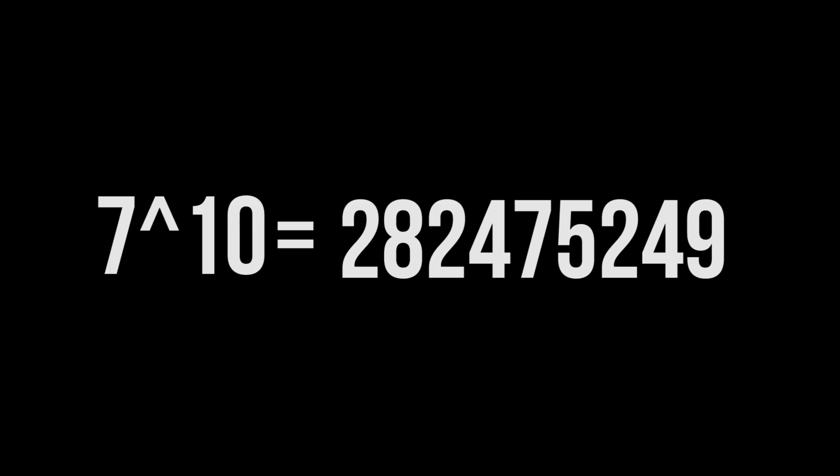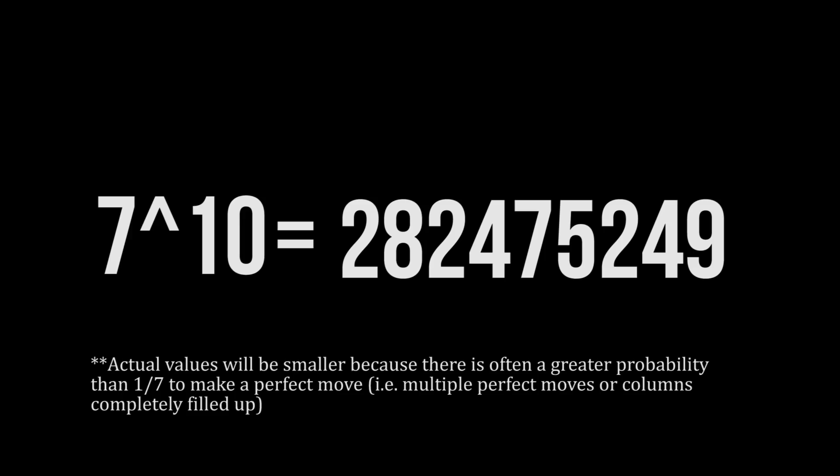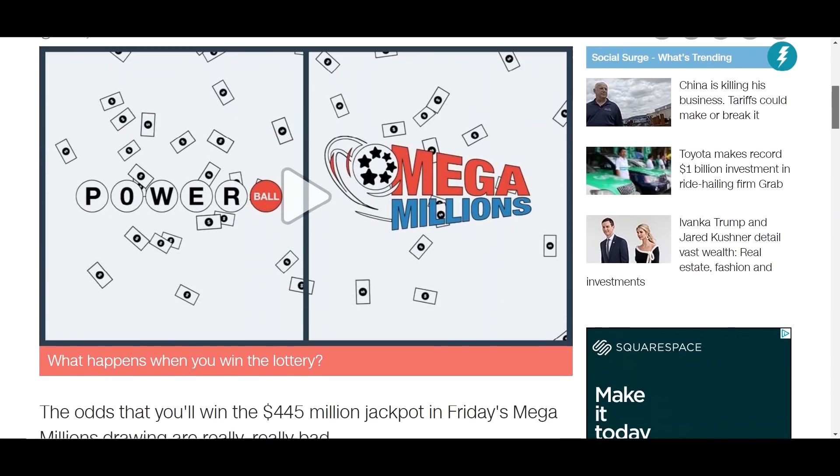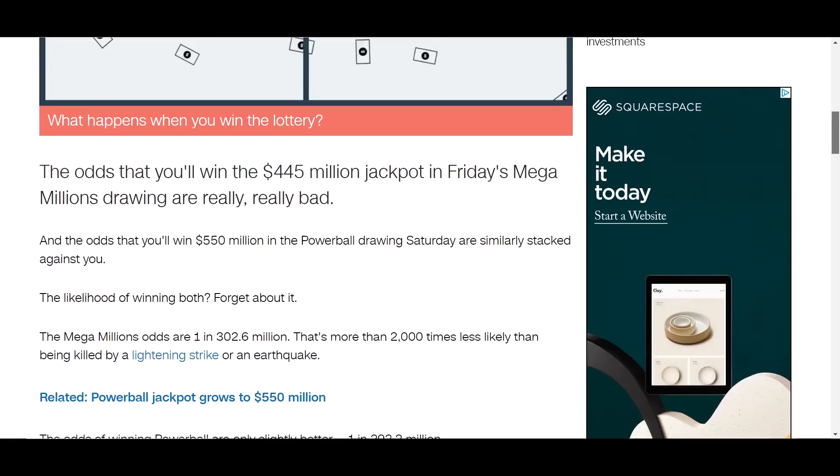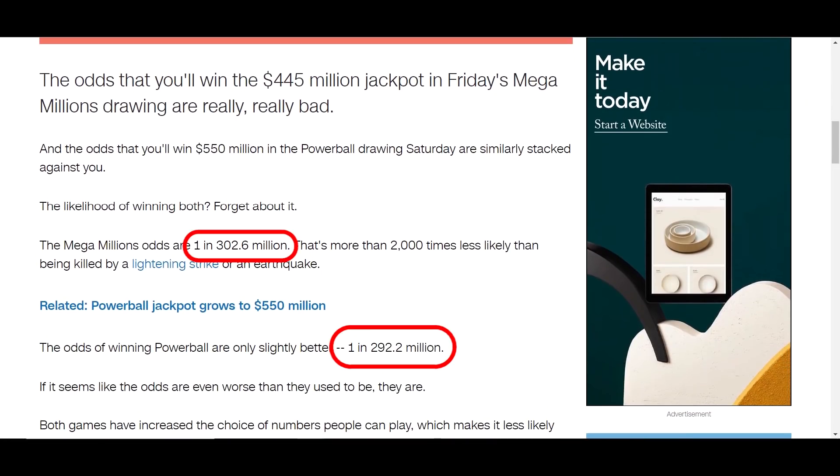That happens approximately one in every 282 million, 475,249 times. And to just put that number in perspective, that is approximately the same probability of winning either the Powerball or the Mega Millions here in the United States.